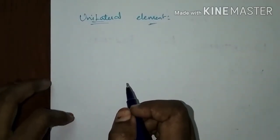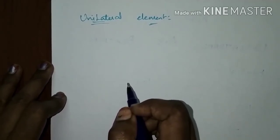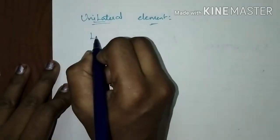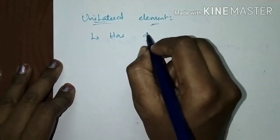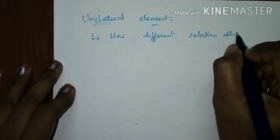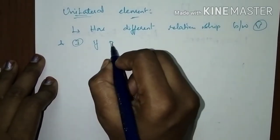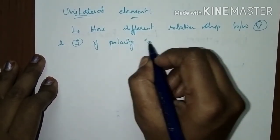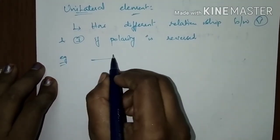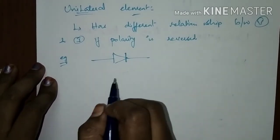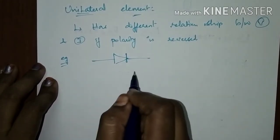Now let us see the unilateral element. A unilateral element has a different relationship between voltage and current if the voltage polarity is reversed. It is the opposite of the bilateral element. An example of a unilateral element is a diode — a unidirectional device that conducts in only one direction. If you apply a positive supply it conducts, but if you reverse-bias the diode, it will not conduct.